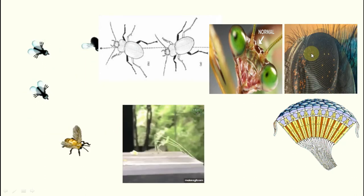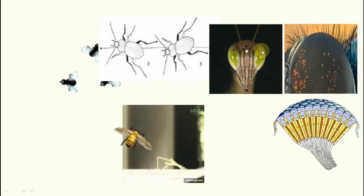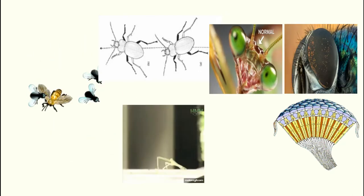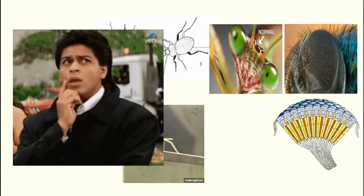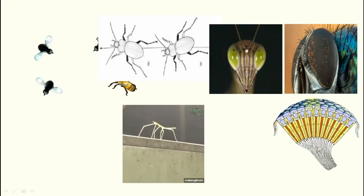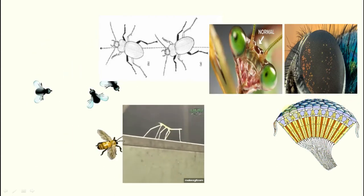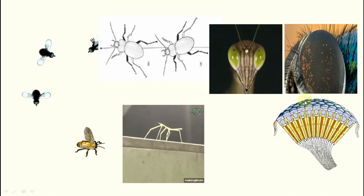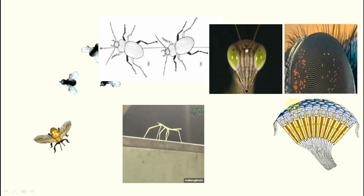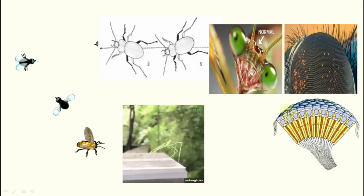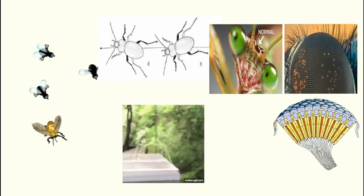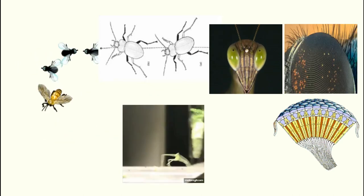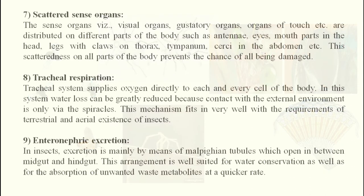Compound eyes are also part of structural perfection. Insects have one pair of compound eyes and also simple eyes called ocelli. Each compound eye is made up of individual units called ommatidia. The major advantage is redundancy — if some ommatidia are damaged due to an accident, the other ommatidia still function for visualization. That is a significant advantage.